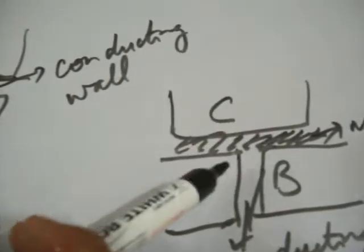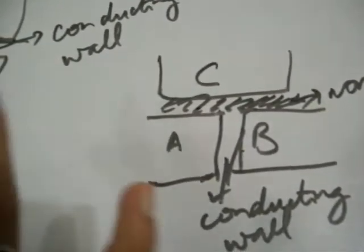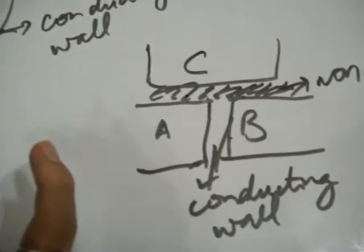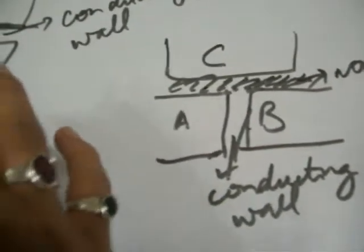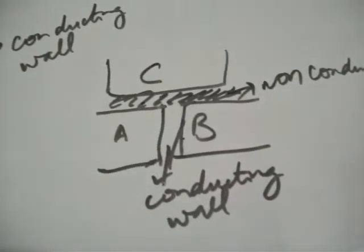So now, when this is non-conducting, this is conducting, now they can exchange heat. It is seen that they don't exchange heat because they are already in thermal equilibrium. Now, that's the way it has been shown.